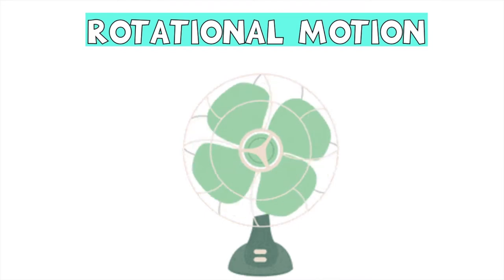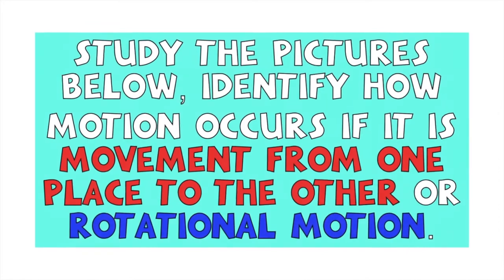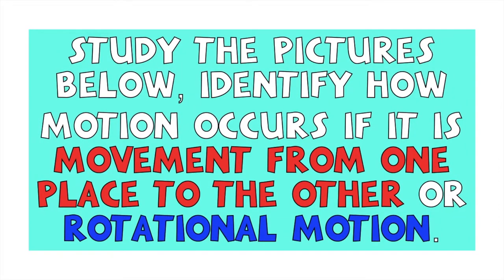Again, this is an example of rotational motion — the movement is in circular mode. So now, let's study the pictures below and identify how motion occurs: if it is movement from one place to the other, or rotational motion.